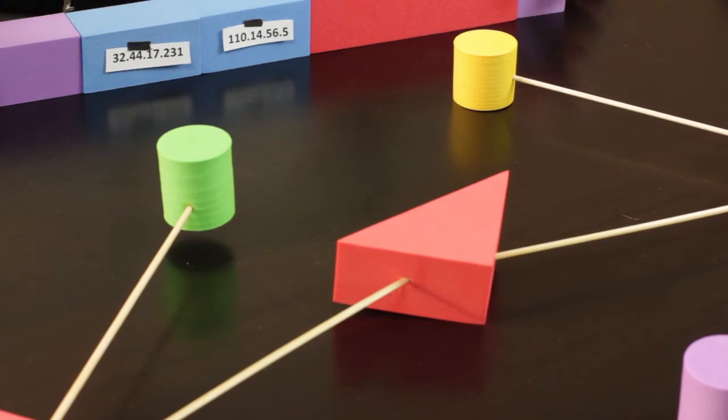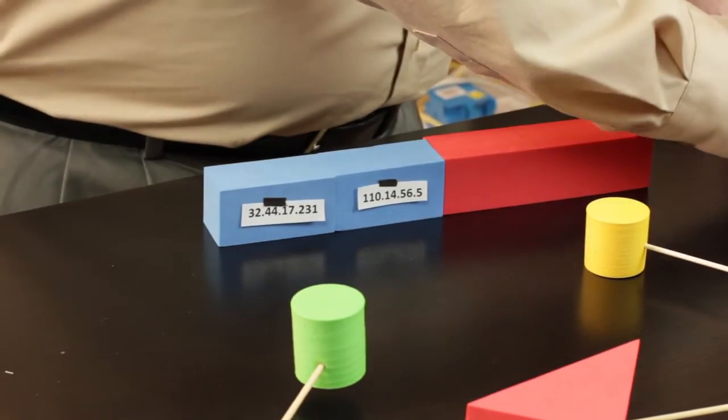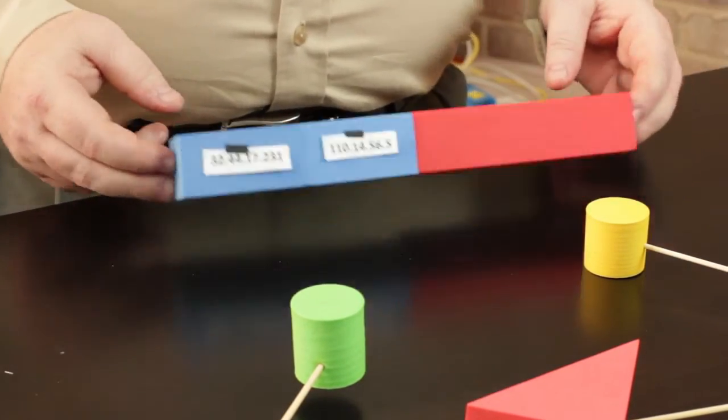Now once it gets into the router, the router strips away all of the frame stuff, leaving just the IP packet.